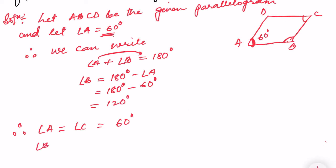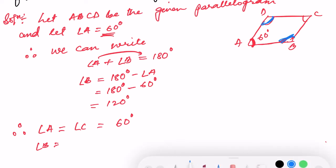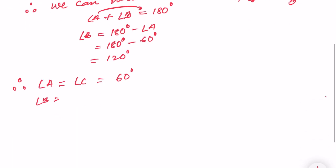Similarly, angle B and angle D are equal — opposite angles of a parallelogram are equal. So angle B is equal to angle D, which is equal to 120°.